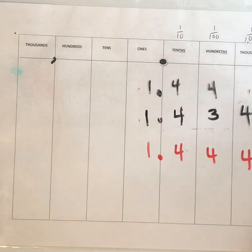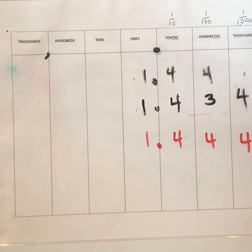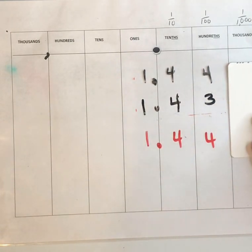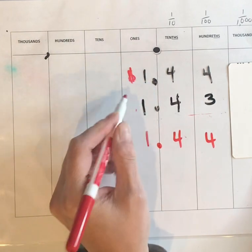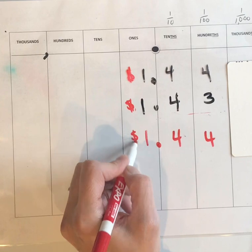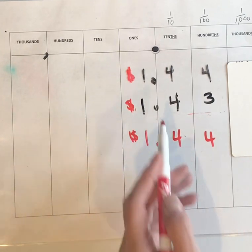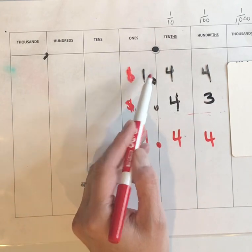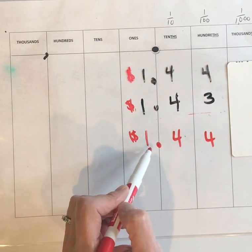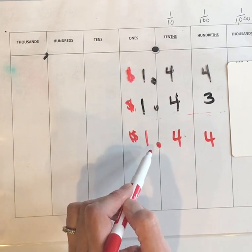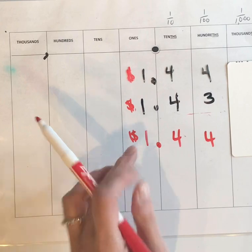If we cover the thousandths place and think money, we have one dollar and forty-four cents, one dollar and forty-three cents, and one dollar and forty-four cents. We know that one dollar and forty-three cents is smaller than one dollar and forty-four cents — but now we have two amounts that both equal one dollar and forty-four cents.